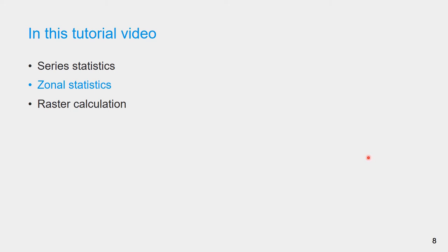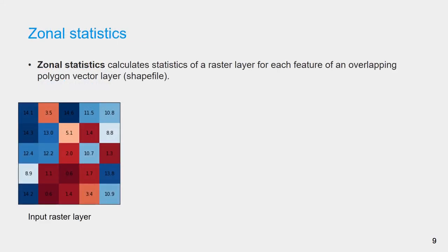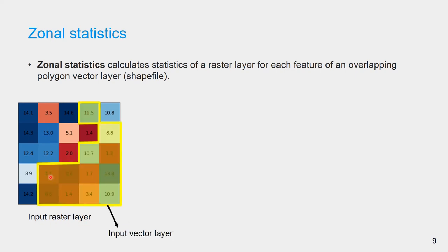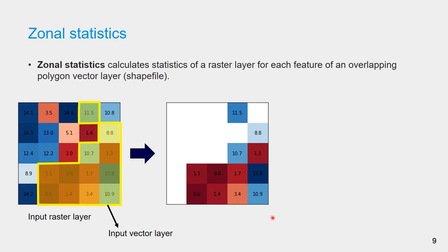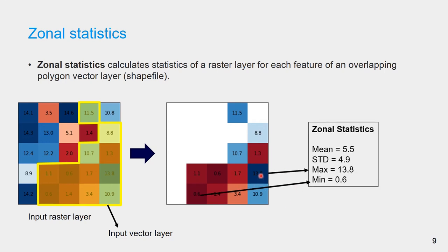Next, I will show you how to compute zonal statistics in QGIS. Zonal statistics calculates statistics of a raster layer for each feature of an overlapping polygon vector layer. You can open a shape file to add a vector layer of your area of interest, such as a crop field, a river basin, or an agricultural zone. For example, in this vector layer we have a feature represented in yellow. The zonal statistics algorithm will select all pixels of the input raster layers within this feature, then compute statistics from the values of these pixels. Here, the maximum value is the highest and the minimum is the lowest value among these pixels.